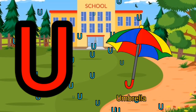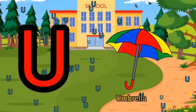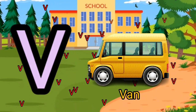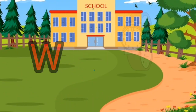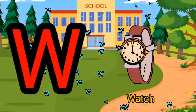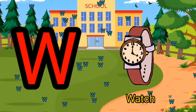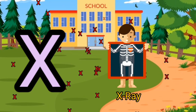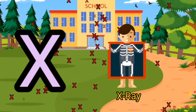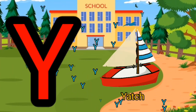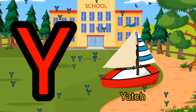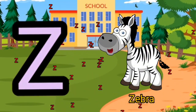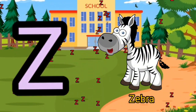T for truck, U for umbrella, V for van, W for watch, X for x-ray, Y for yard, Z for zebra. Bye-bye!